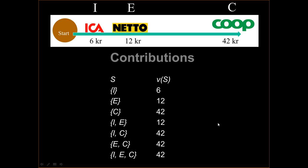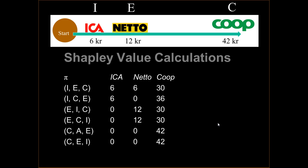We do the Shapley value calculations by looking at the contributions as in the order of paying the cost. If Ika starts paying, they pay 6 — that's the part of the cost from start to Helsingborg. If Netto is then paying when they get off in Halmstad, they pay 6 because Ika has already paid 6. And Coop pays 30 because the cost from start to Coop is 42 but 12 has already been paid.